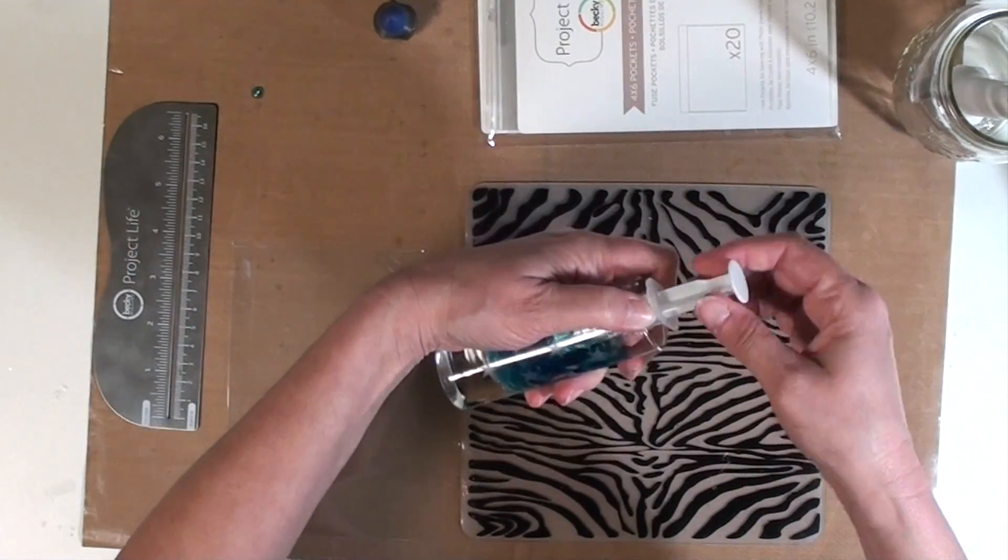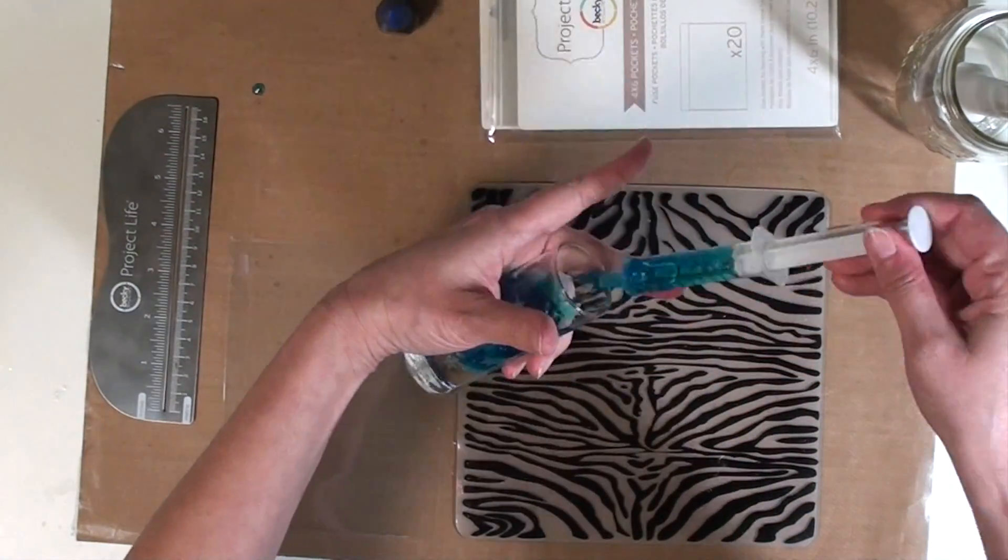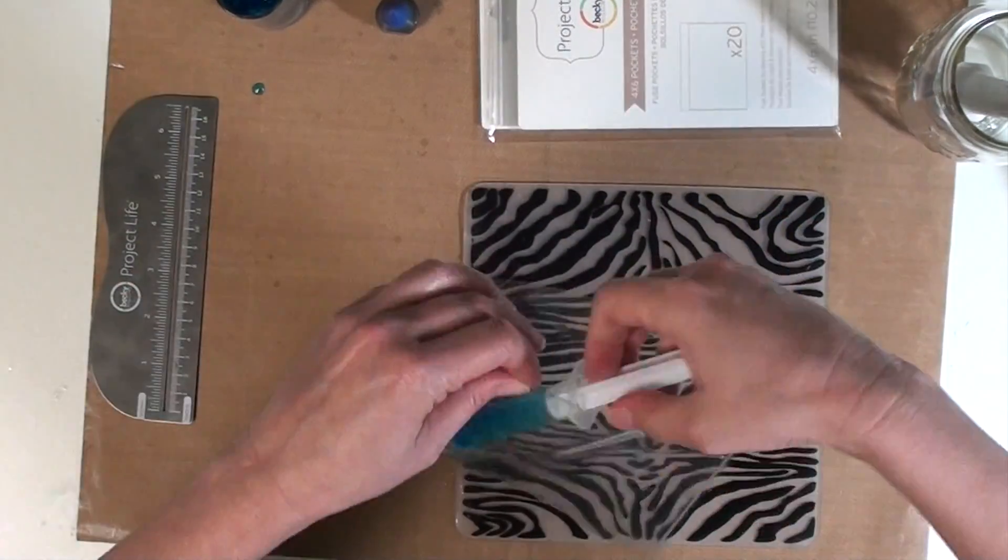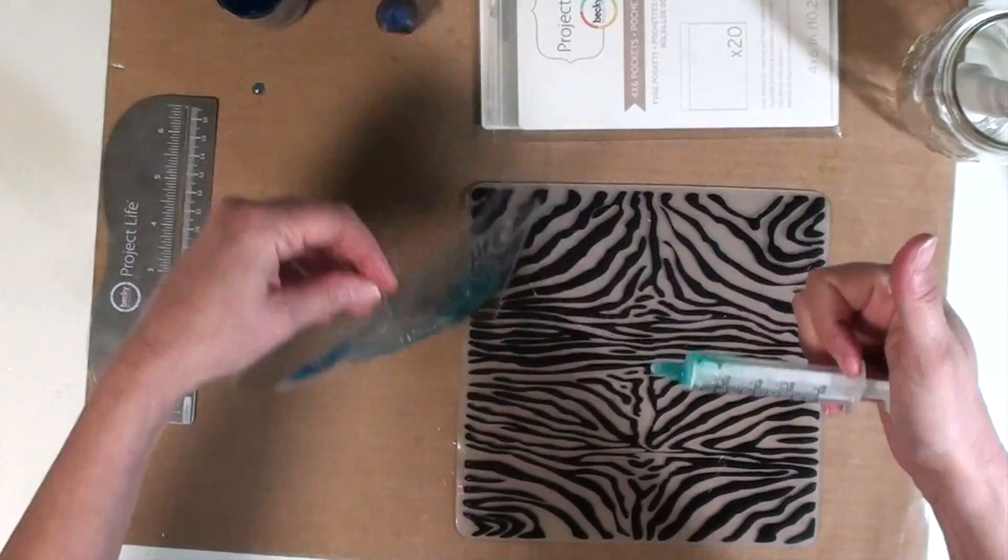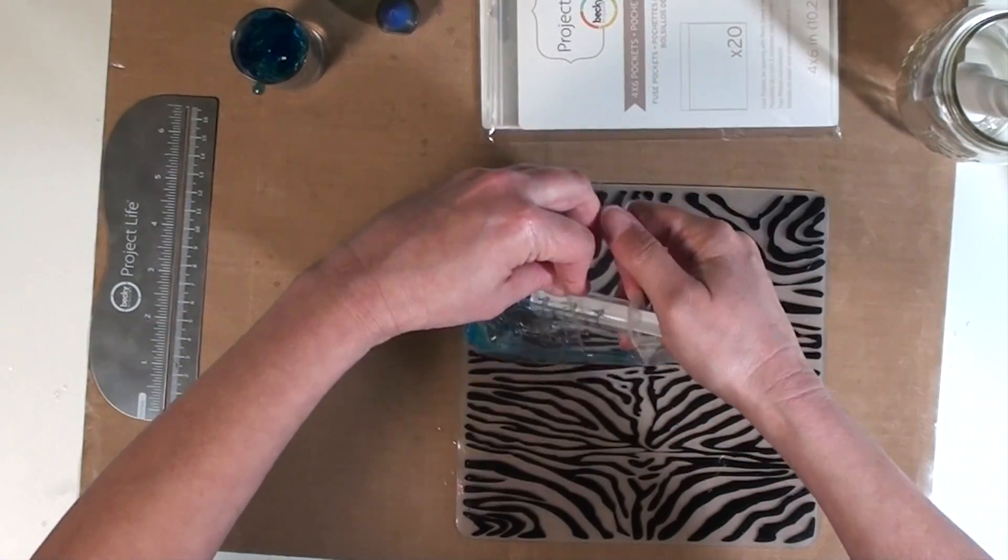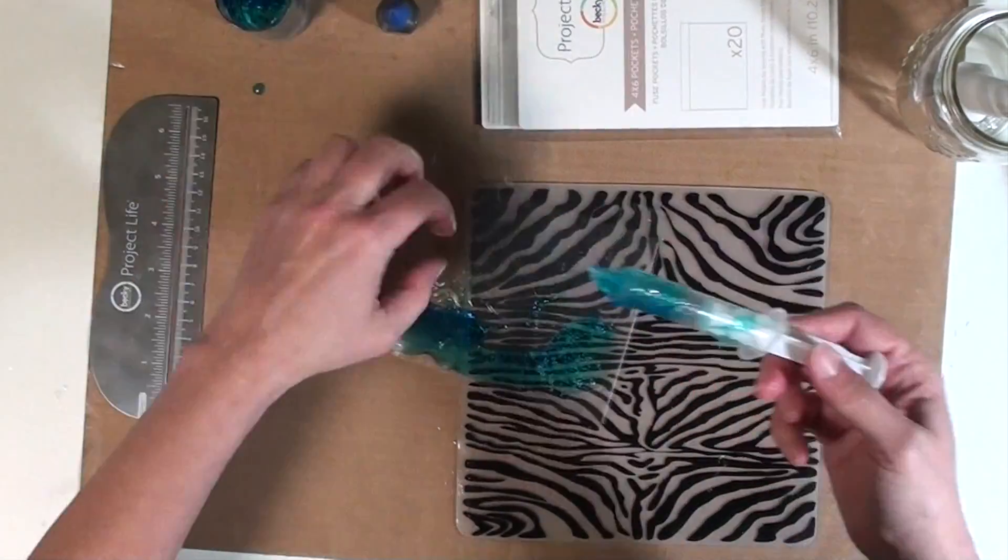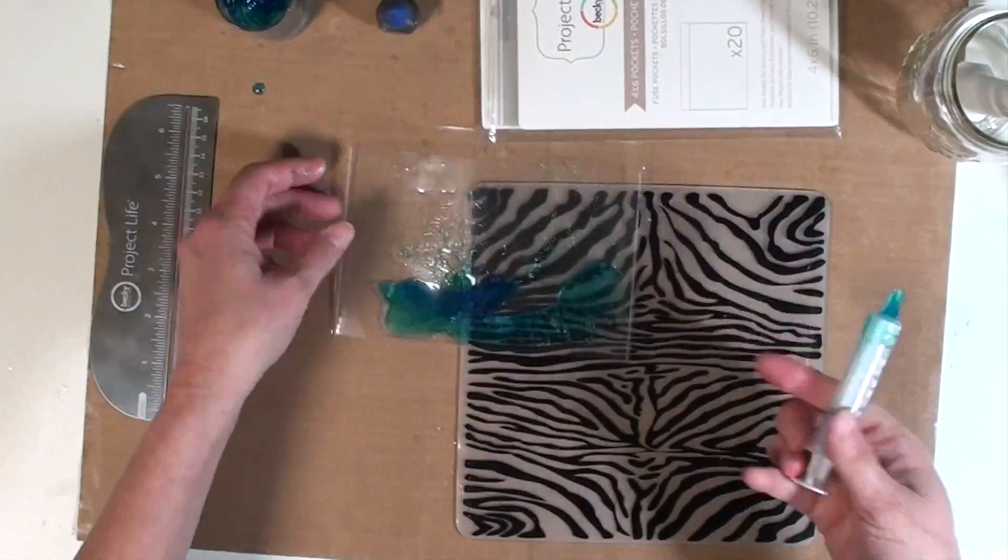The next phase of this was to get the gel inside the Project Life sleeve before sealing it shut. As you can see I was using a medicine oral syringe to pull it out of the shot glass before squeezing it inside of that sleeve and I made sure to be very careful about putting that towards the very bottom so that it would not be up at the top whenever I needed to seal the sleeve.